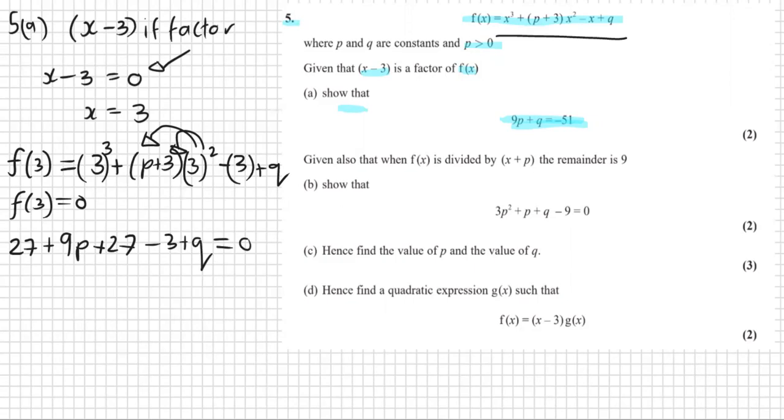Simplify this. 27 plus 27 gives us 51. 51 plus 9P plus Q is all equal to zero. And we want it to look like this. So let's just take 51 to the other side by minusing 51 on both sides. So 9P plus Q equals negative 51. That's the answer to A.